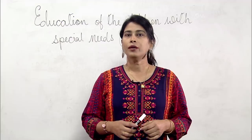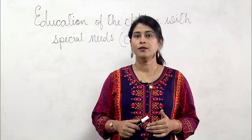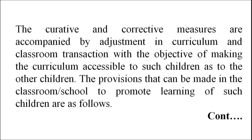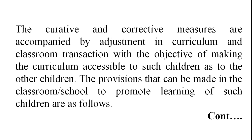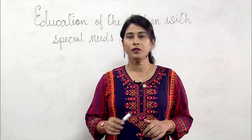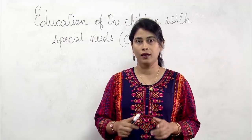For example, children with hearing problems may require medical treatment and correction like a hearing aid to overcome the disability. A child with visual problems may require lens or a magnifying glass. A child with locomotor disability may require crutches or a wheelchair to move around, or some mechanism for adjustment of hands for writing. The curative and corrective measures are accompanied by adjustment in curriculum and classroom, with the objective of making the curriculum accessible to such children as to other children.